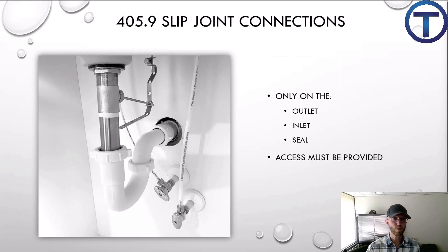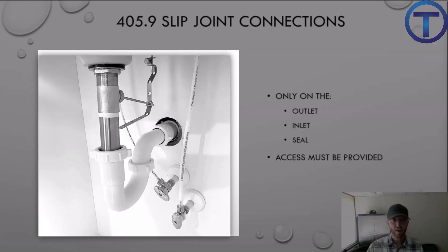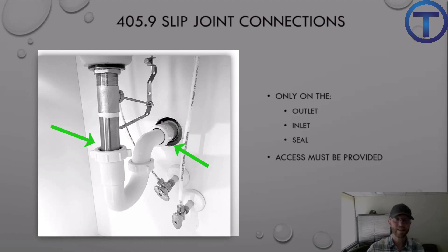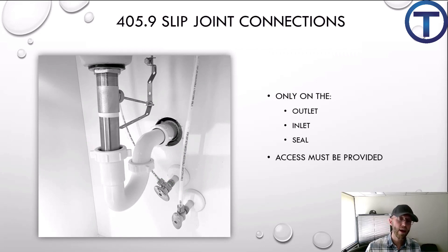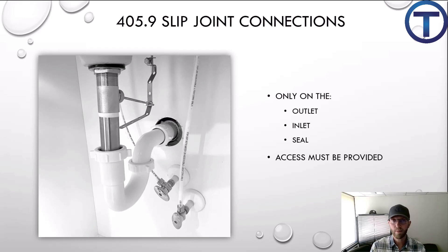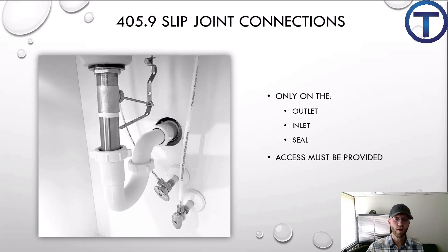405.9 covers slip joint connections, which we use all the time to connect sinks. There is a limit: you can have a slip joint connection on the outlet — that's the back by the wall — on the inlet where it connects to the tailpiece, and within the trap seal. With kitchen sinks or bathroom sinks, we may expand that slightly with disposal waste, continuous waste, or an extension. But beyond what's accessible within a cabinet, we are not to install slip joint fittings inside walls. Anytime a slip joint is used, it has to be accessible — tubs should have an access panel in the wall or ceiling.